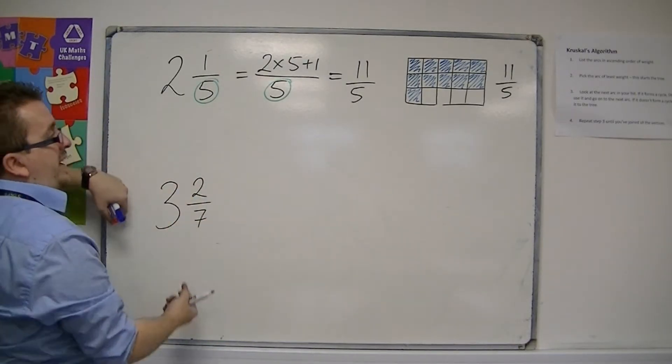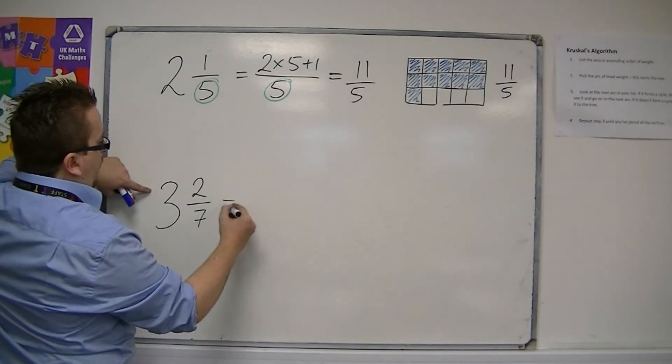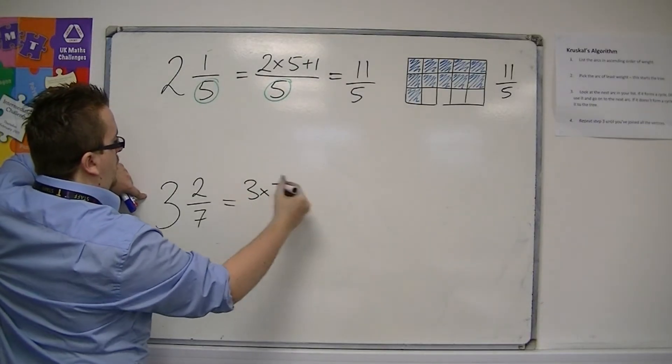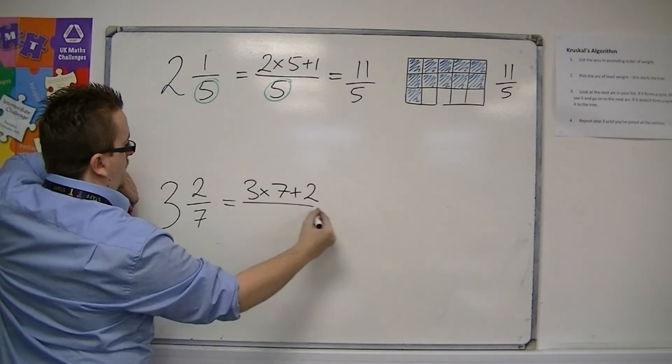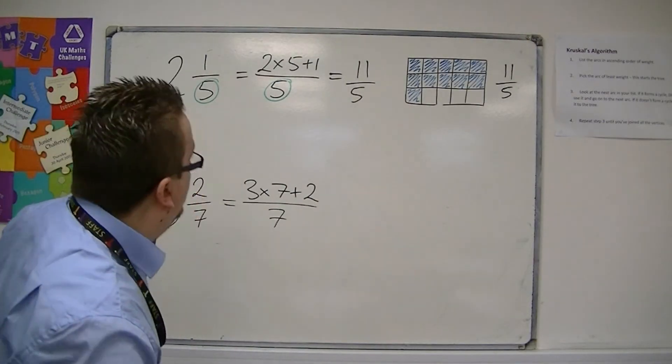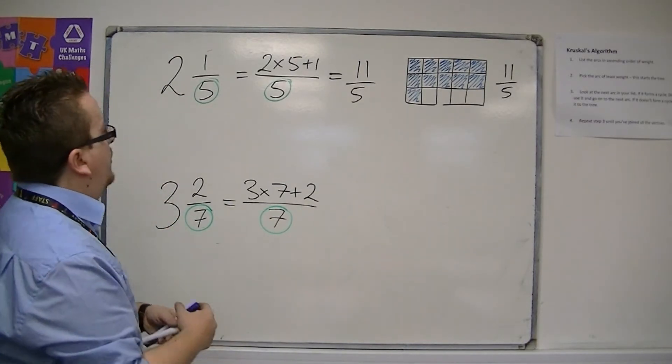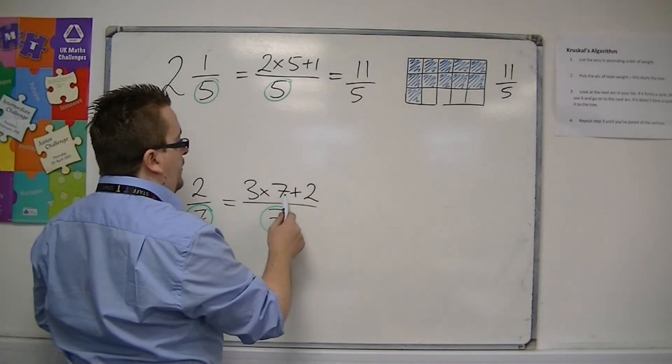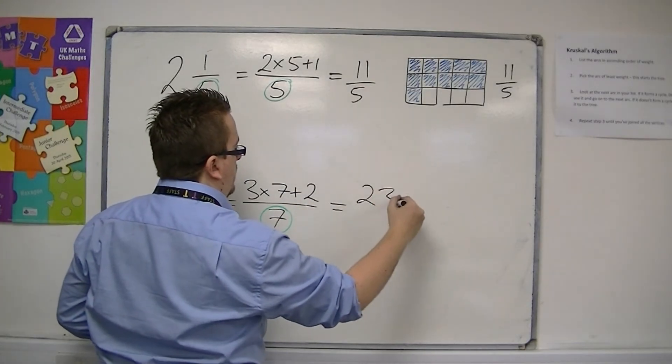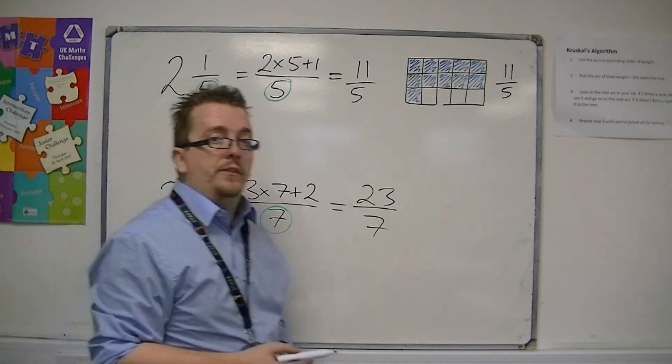For 3 and 2/7, let's try and do this without the diagram. We multiply the 3 by the 7 and add the top. And the denominator, the 7, stays the same. So we end up with 3 times 7 is 21 plus 2 is 23 over 7. So this is 3 and 2/7.